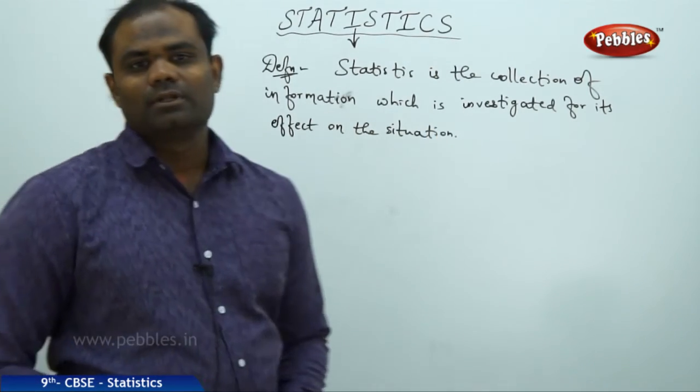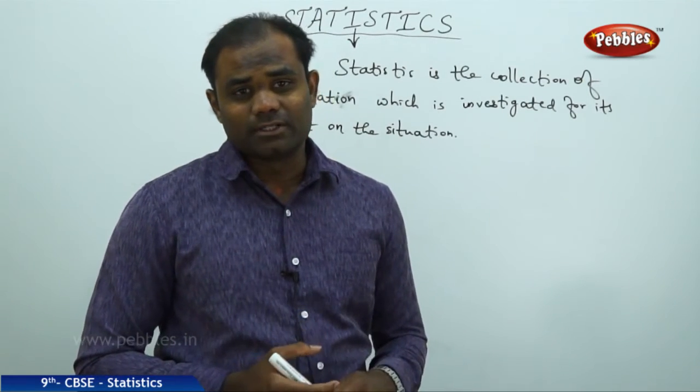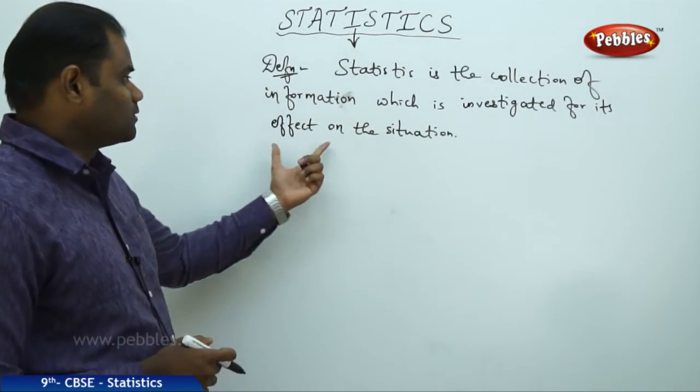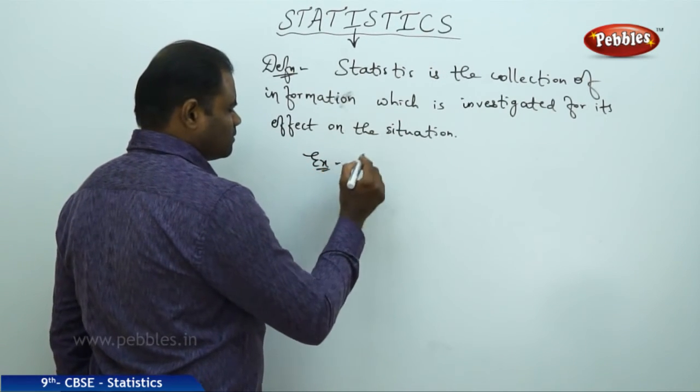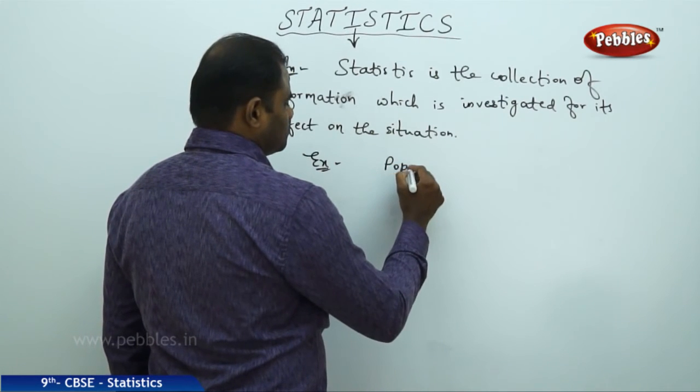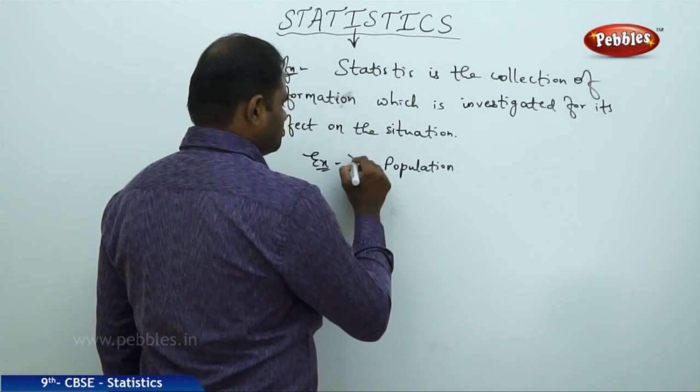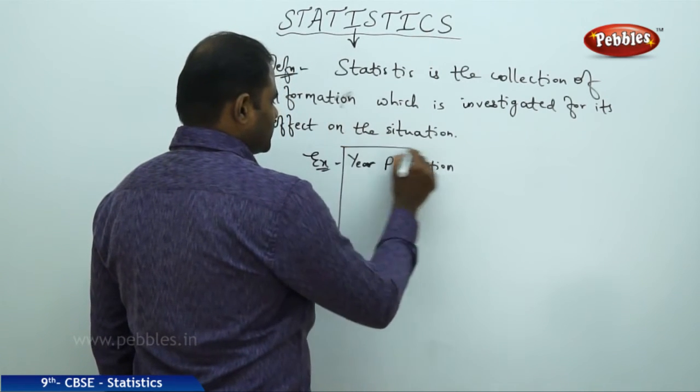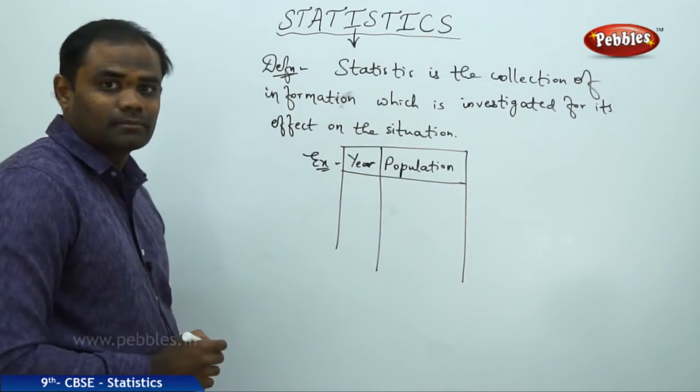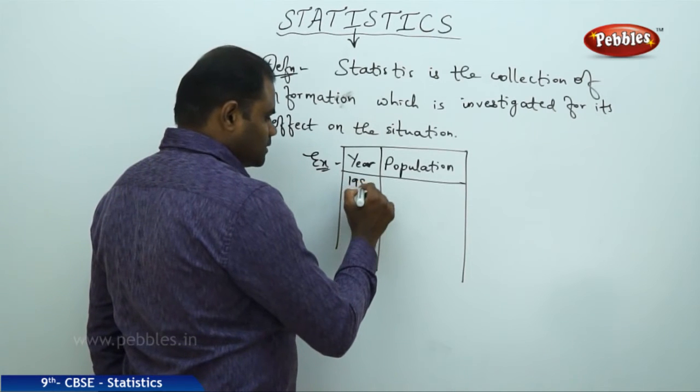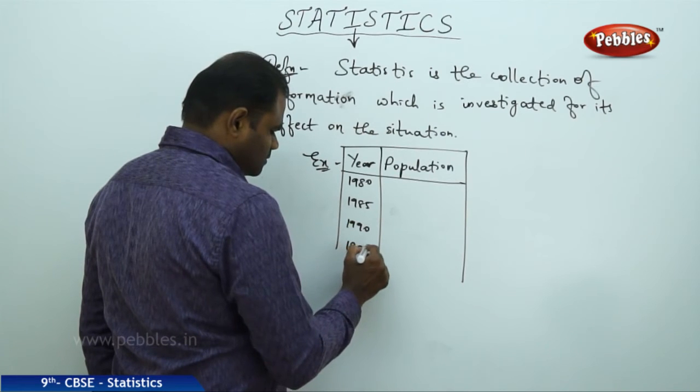For example, the population of the country for different years is information which gives us the effect on the situation. If I take the year and population, say I start from 1980, 1985, 1990, 1995, 2000, and so on.